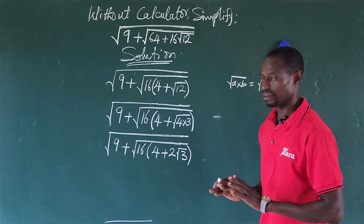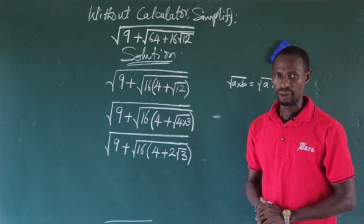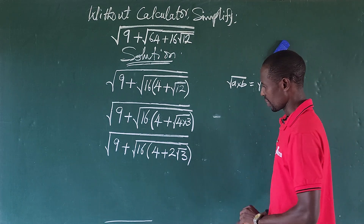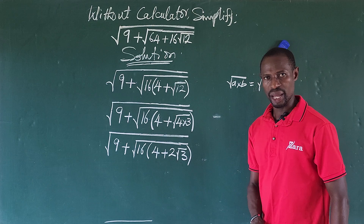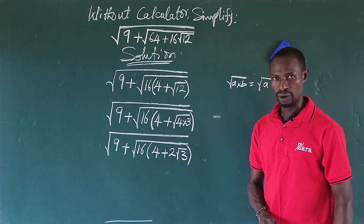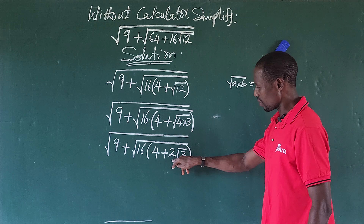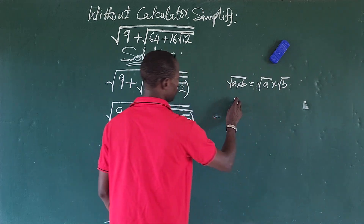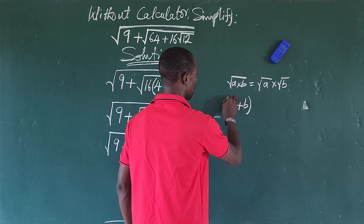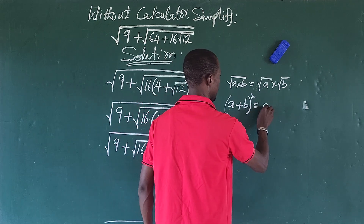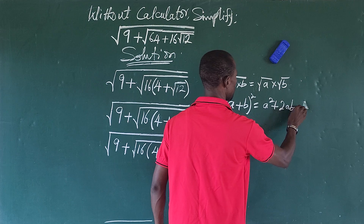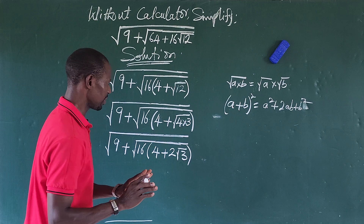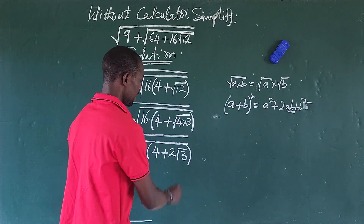The essence of this video is to give tips on how to solve this kind of simplification quickly. Notice that 4 is a perfect square — it can be written as 2 squared. So we have 2 squared and 2 root 3. This brings us to the algebraic identity: (a + b)² = a² + 2ab + b².